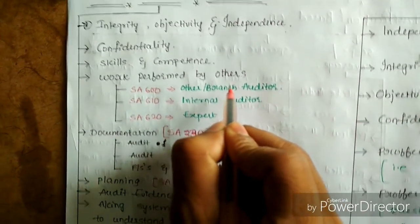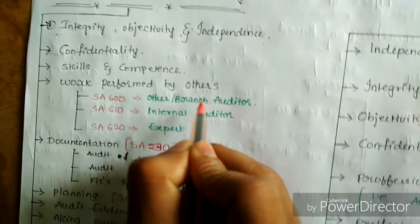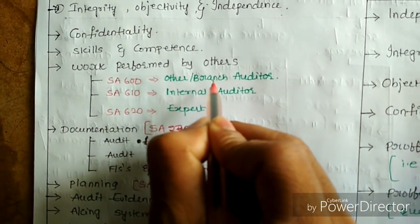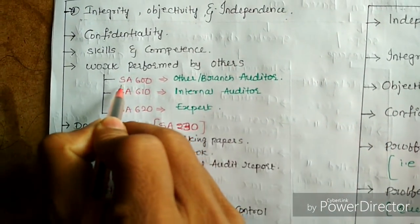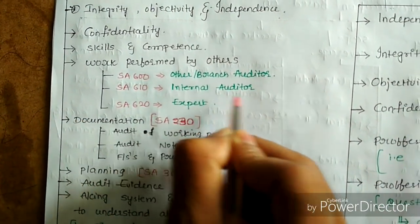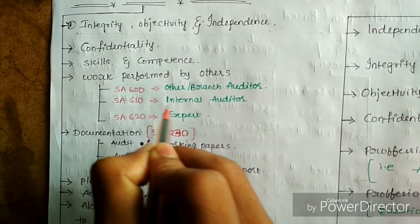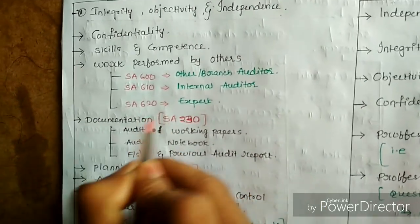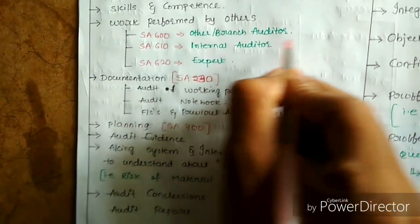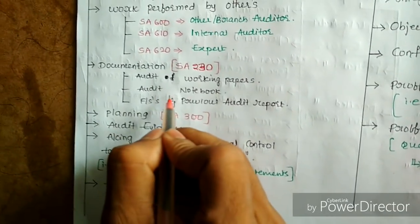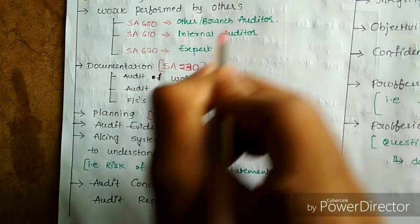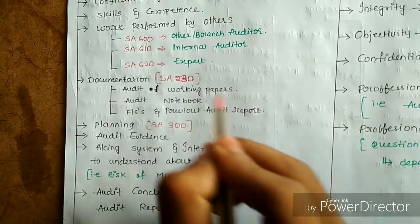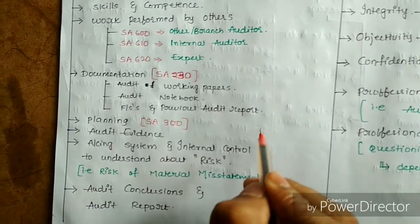In auditing, the auditor has to verify the work performed by others — the branch auditor, relating to SA 600, the internal auditor SA 610, and work performed by an expert, SA 620. These standards govern these matters. After verification and examination of all records, the auditor should give a report on all matters with respect to auditing.